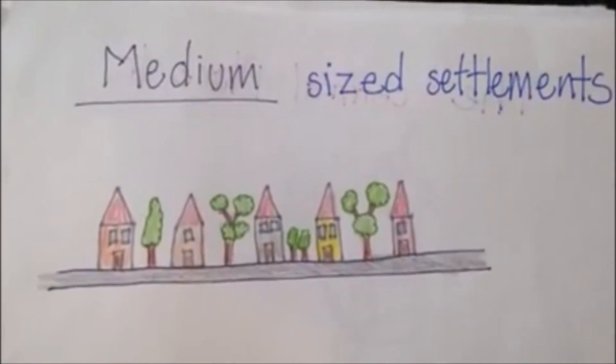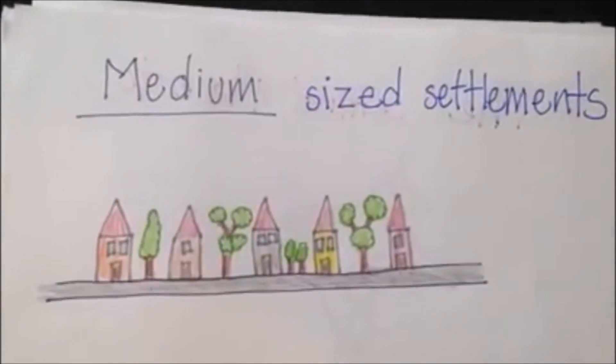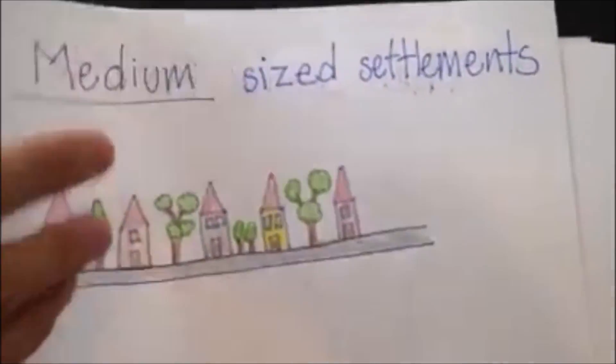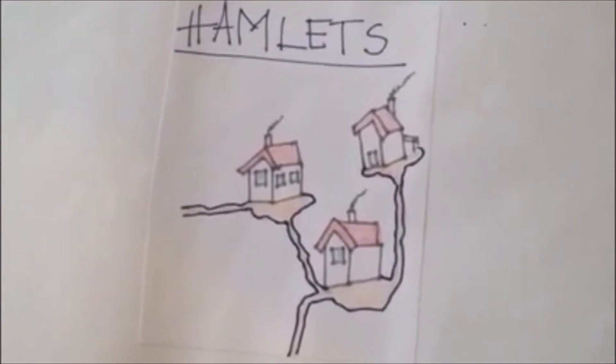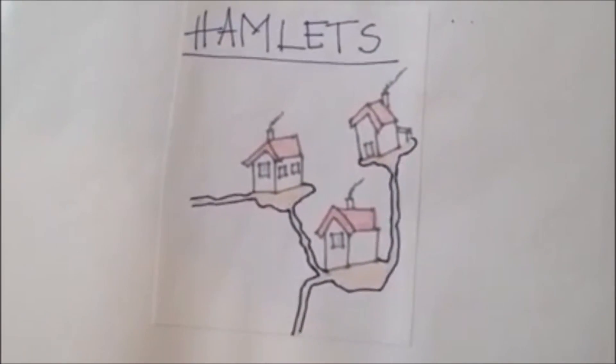Medium-sized settlements have the same goods and services as villages and hamlets offer, but only some of those that cities offer. At the bottom are small market villages and roadside hamlets that may contain nothing more than a post office, service station, or cafe.